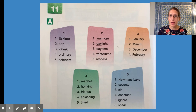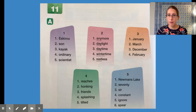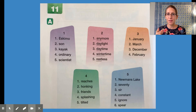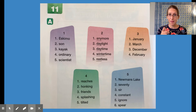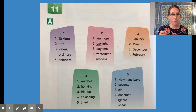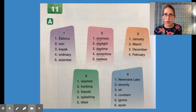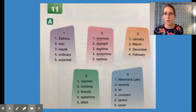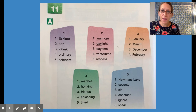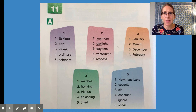Column three — we have the names of some months. Word one is January. Word two is March. Word three is December. Word four is February. That word February — we usually say "February," but it's actually spelled with an R: February. But we usually just say February.